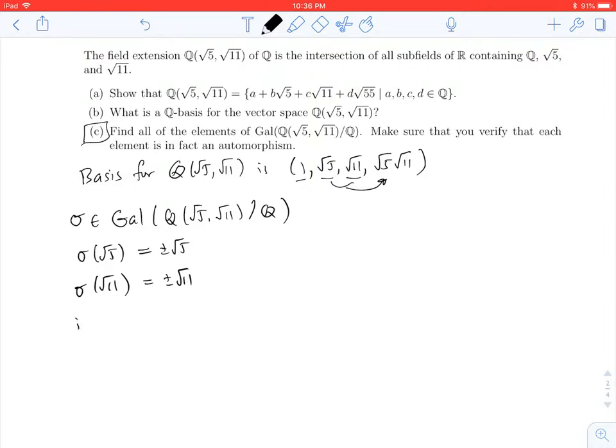So of course, there's the identity, and that's the one where root 5 and root 11 are both sent to themselves. We have one, which I'll call tau plus minus, that's going to send root 5 to root 5, and root 11 to negative root 11.